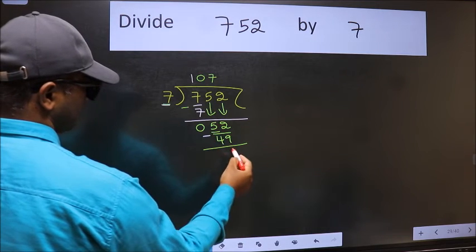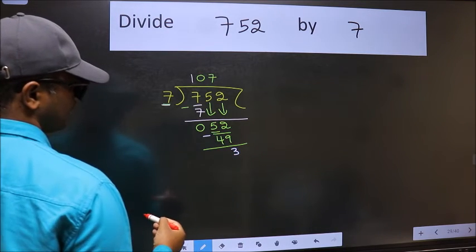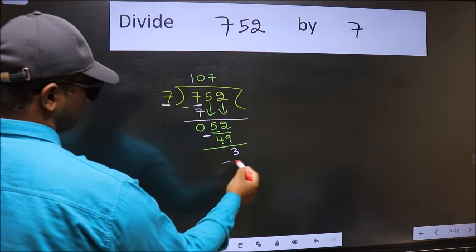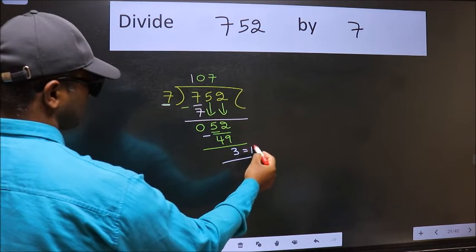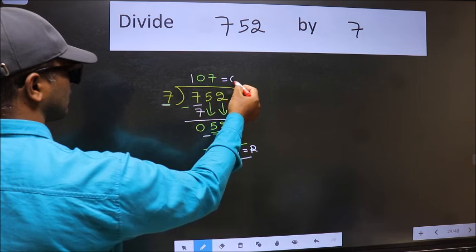We get 3. No more numbers to bring down, so we stop here. This is our remainder and this is our quotient.